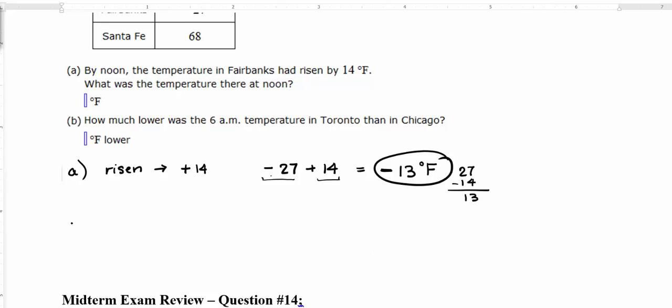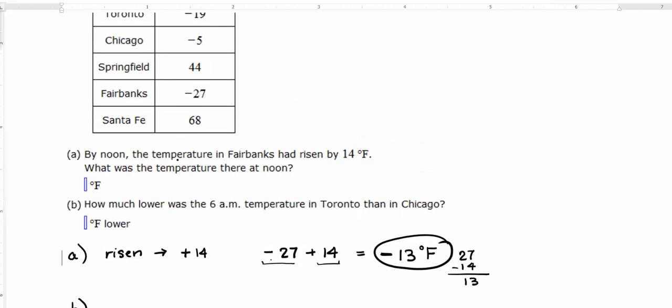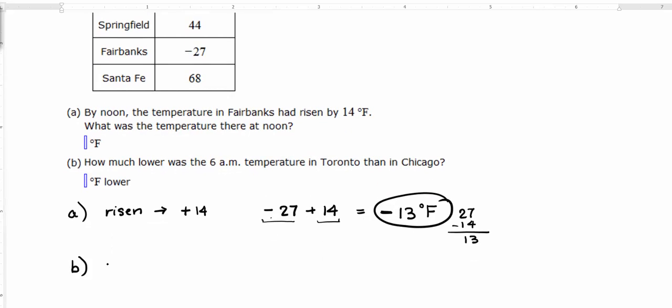For part B, it says, how much lower was the 6 a.m. temperature in Toronto than in Chicago? Whether they're asking for how much lower or how much higher, you're always going to look for the difference. And you're going to take the larger, the higher number minus the lower number. It's always going to be higher minus lower.